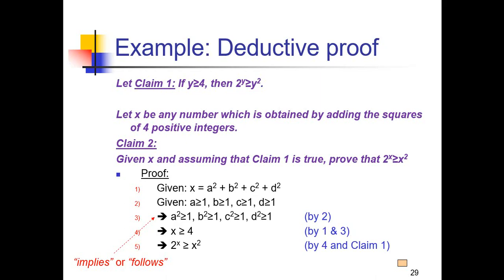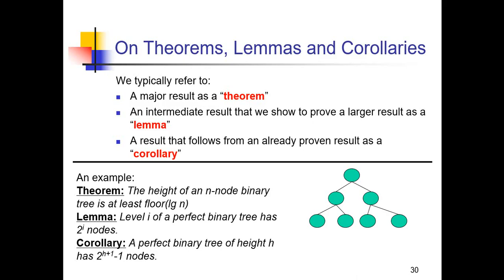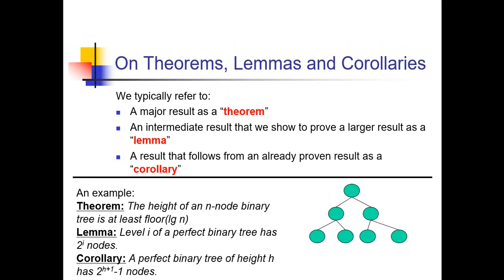Finally, after adding them, which is 1²+1²+1²+1² which is 4, so that's why x ≥ 4. By that we can easily write 2^x ≥ x². That's how we prove the deductive proof.